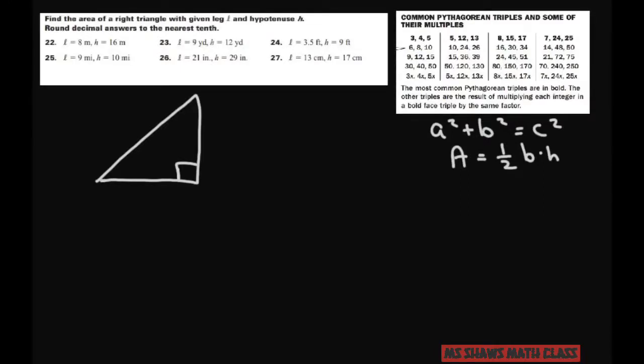So we'll get started. For problem 22 we have a leg, and it doesn't matter which one, we'll just call this the leg. And we'll just say the figure is not drawn to scale. And the hypotenuse is 16.